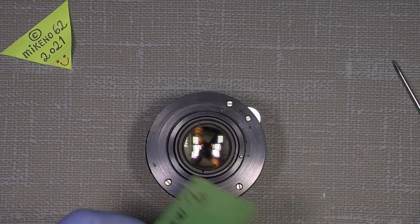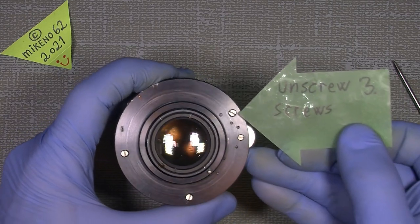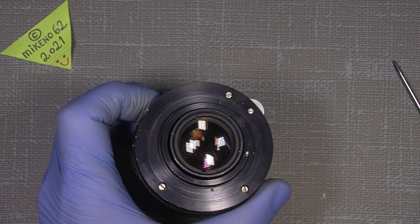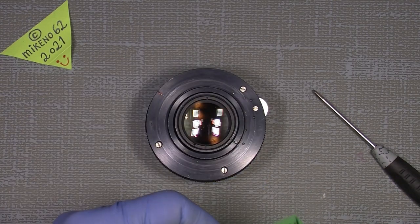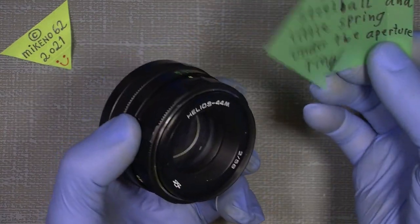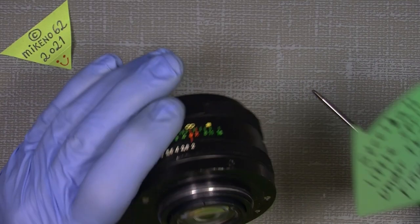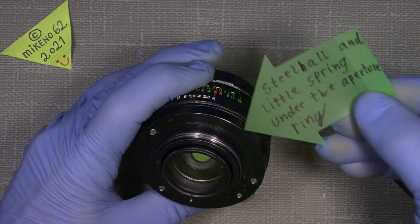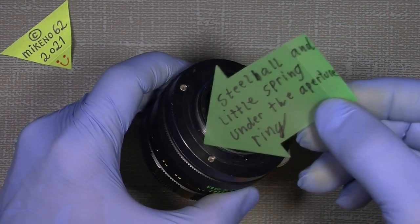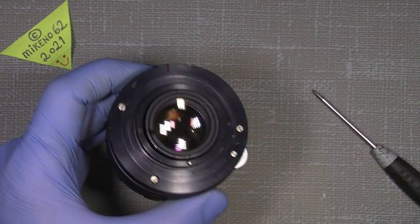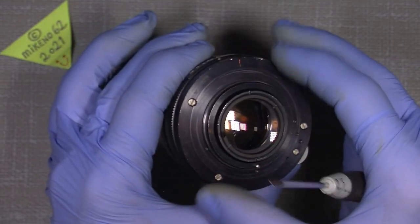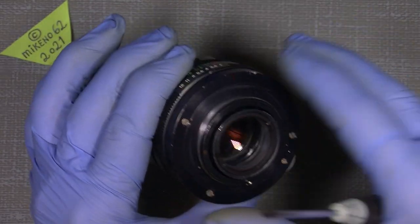And then we will unscrew the three screws - this one, this one, and this one. And the last thing is the two steel bolts. There is one close to the index and 180 degrees on the other side, somewhere around here.